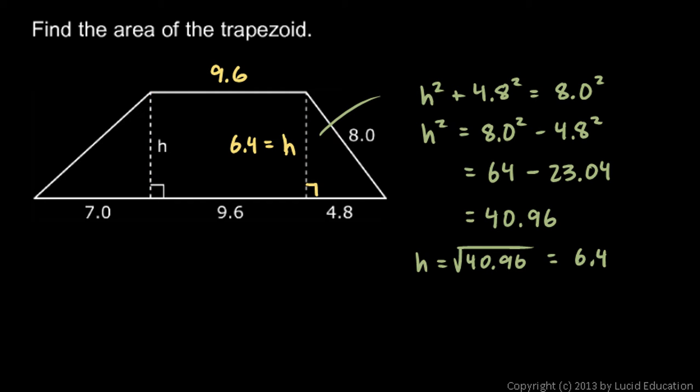And now that we know the height, we can find the area. The area will be the average of the bases times the height. So let's look at this base down here. That's going to be the sum of those three little pieces. So let's call that base b, and I'll say that b = 7 + 9.6 + 4.8. That works out to 21.4.